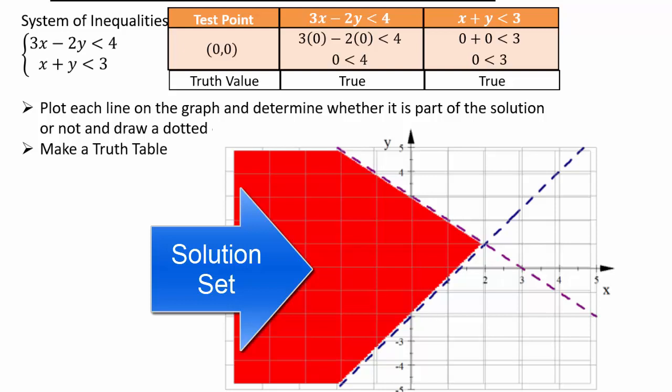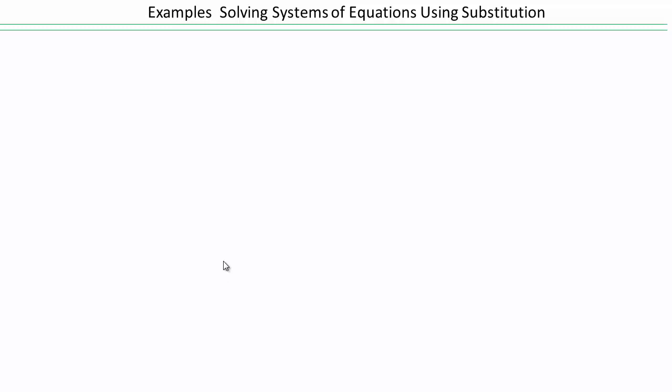The substitution method is another approach to solving systems of equations. We need other methods because graphing doesn't always allow you to read off the exact point of intersection, especially without a fine enough scale. To find exact solutions, we use algebraic methods like substitution.